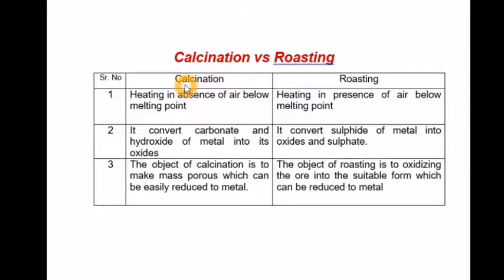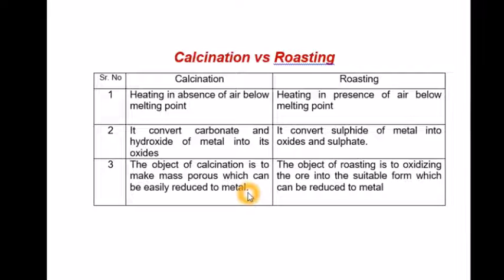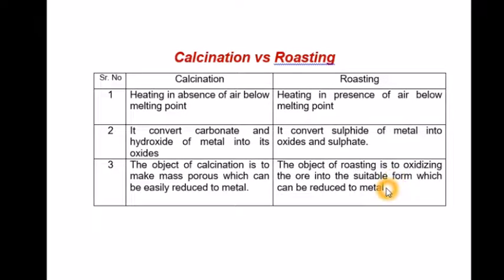In the calcination process, it makes the mass porous, which can be easily reduced to metal. In the roasting process, it oxidizes the ore into a suitable form which can be reduced to metal — as seen in the example where cinnabar is oxidized to form its oxide by removing SO₂.